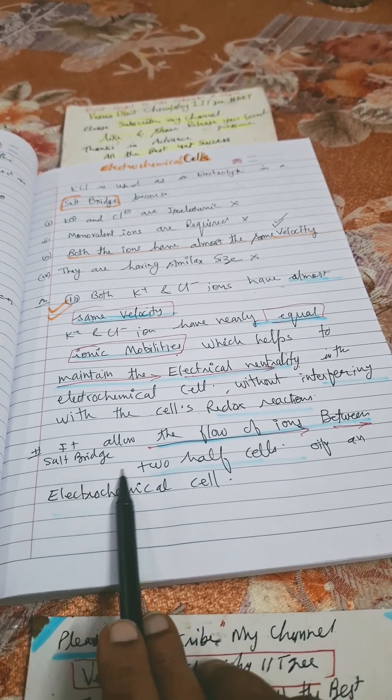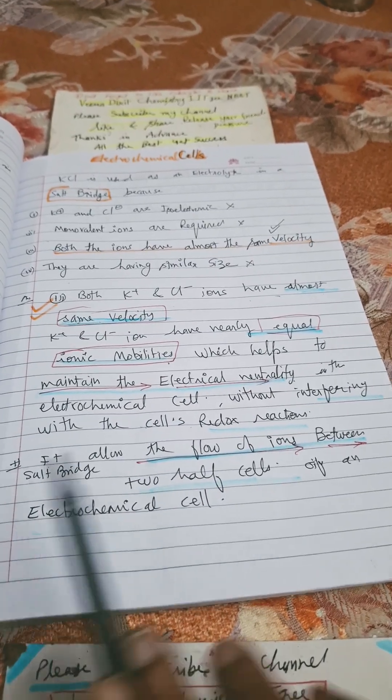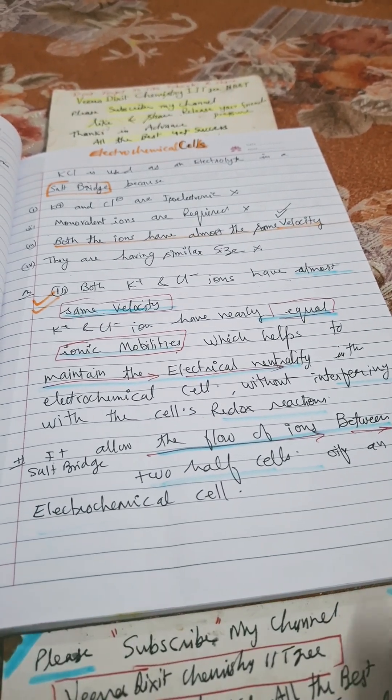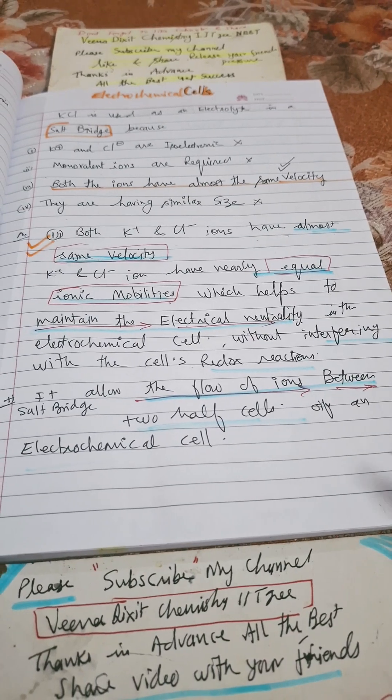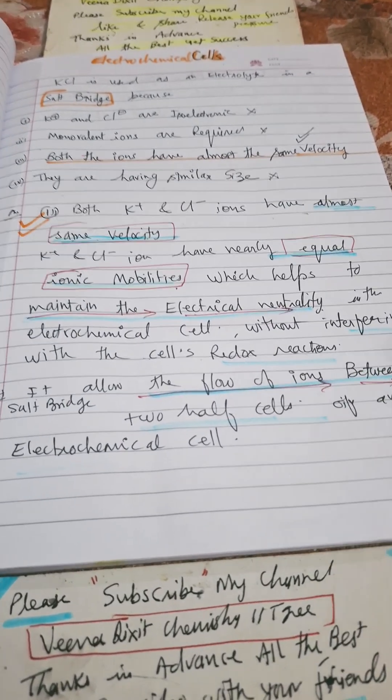So salt bridge is very useful for this. For electrochemical cells, if you will not use it, the cell will not work. Simple. Because flow of ions will be stopped. So we have to use salt bridge. Salt bridge is very essential.